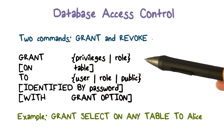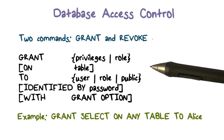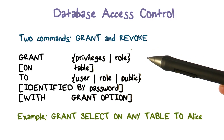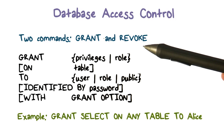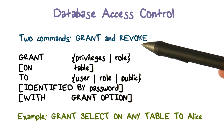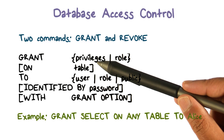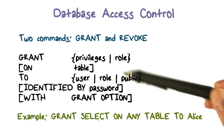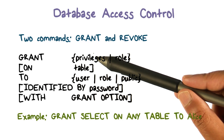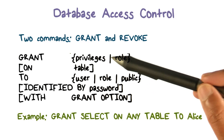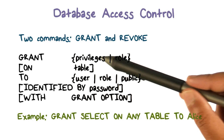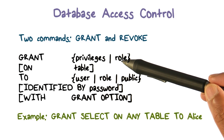Let's talk about how access control is done in databases. There are two basic commands in different variations of SQL — details may differ, but we are basically talking about the key concepts. You can grant or revoke. This is an example of how access could be granted. You can grant either a set of privileges — for example, selecting some tuples — on a table, or you can grant a role to a certain user.